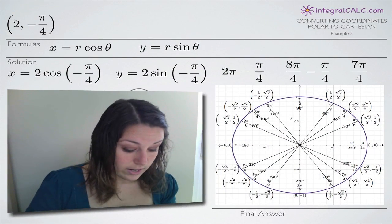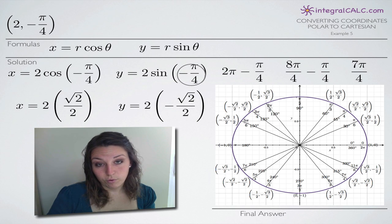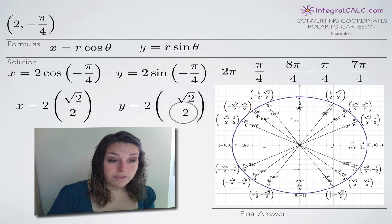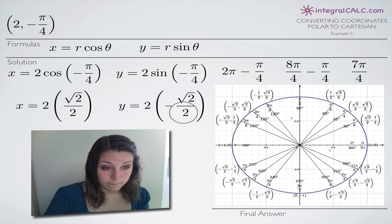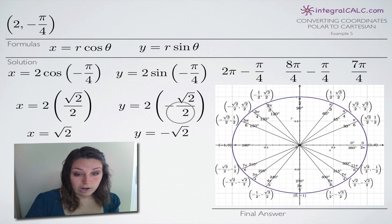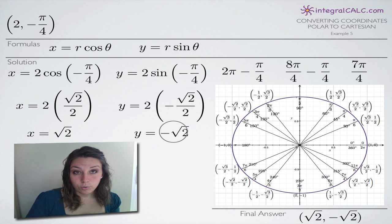Heading back to our equations: cosine of negative pi over four is positive square root of two over two, and sine of negative pi over four is negative square root of two over two. We plug those in and simplify — the two in the numerator cancels with the two in the denominator, giving us x equals square root of two. The same cancellation for y gives us negative square root of two. So our final answer is square root of two comma negative square root of two, which is exactly equivalent in rectangular coordinates to the polar coordinate two comma negative pi over four.